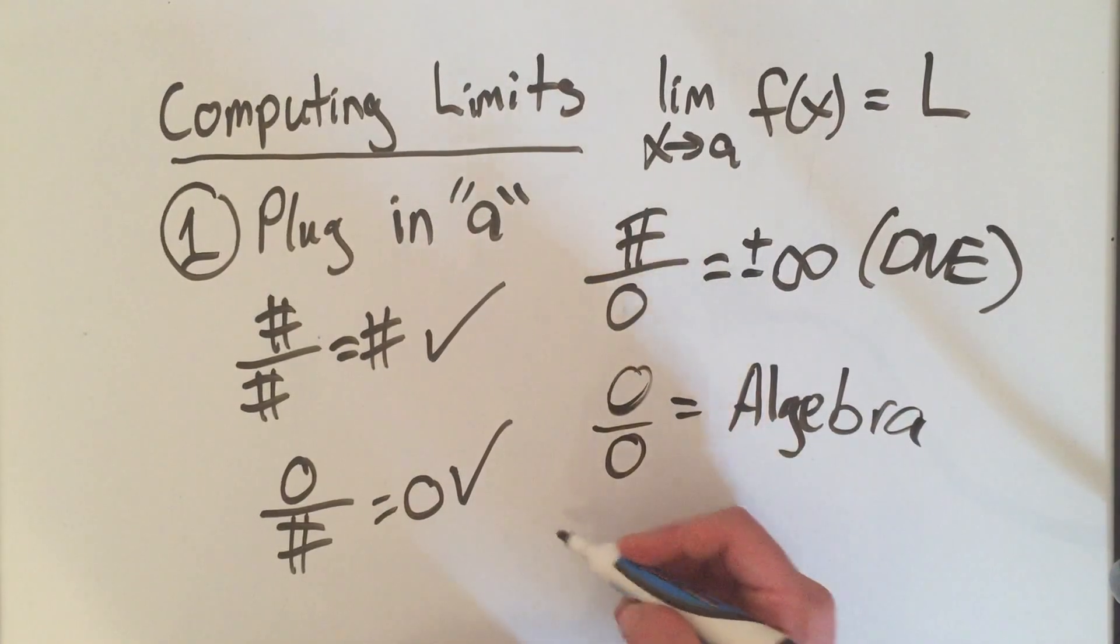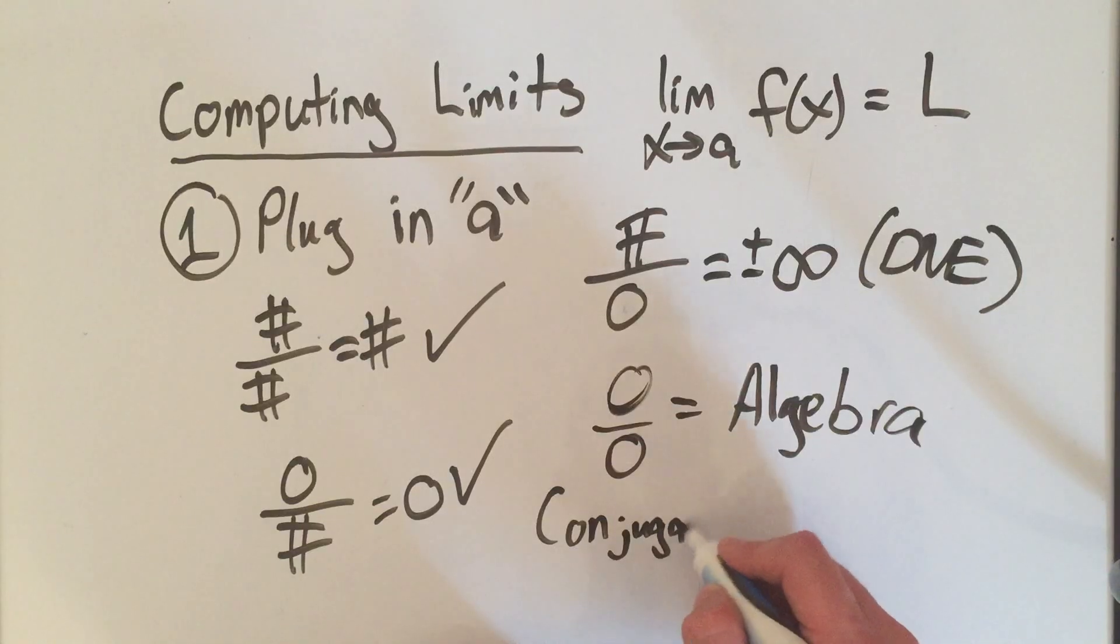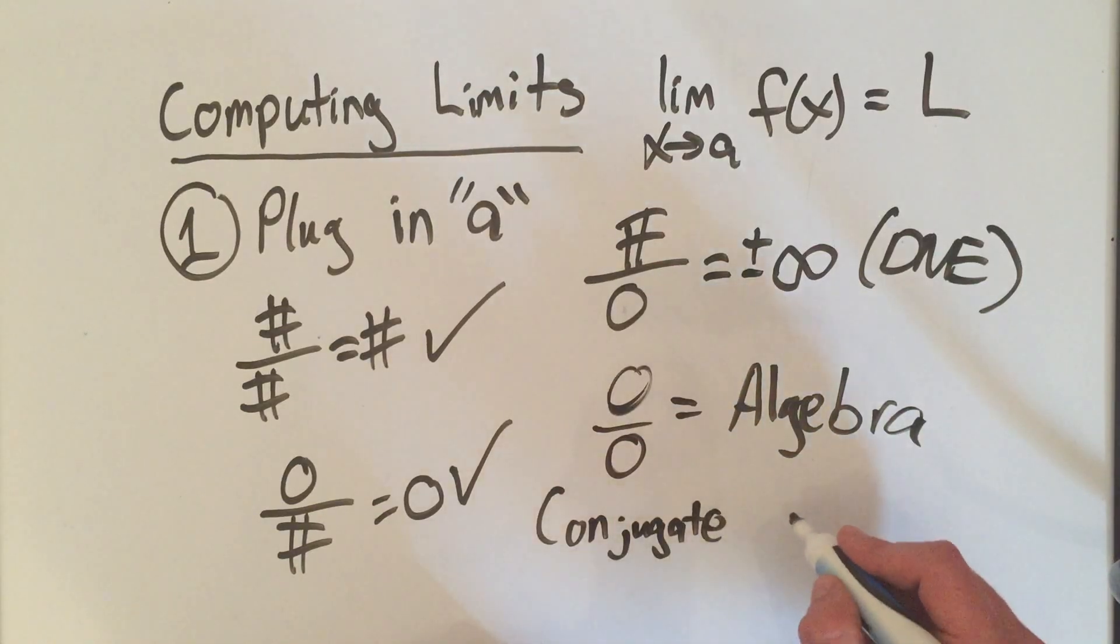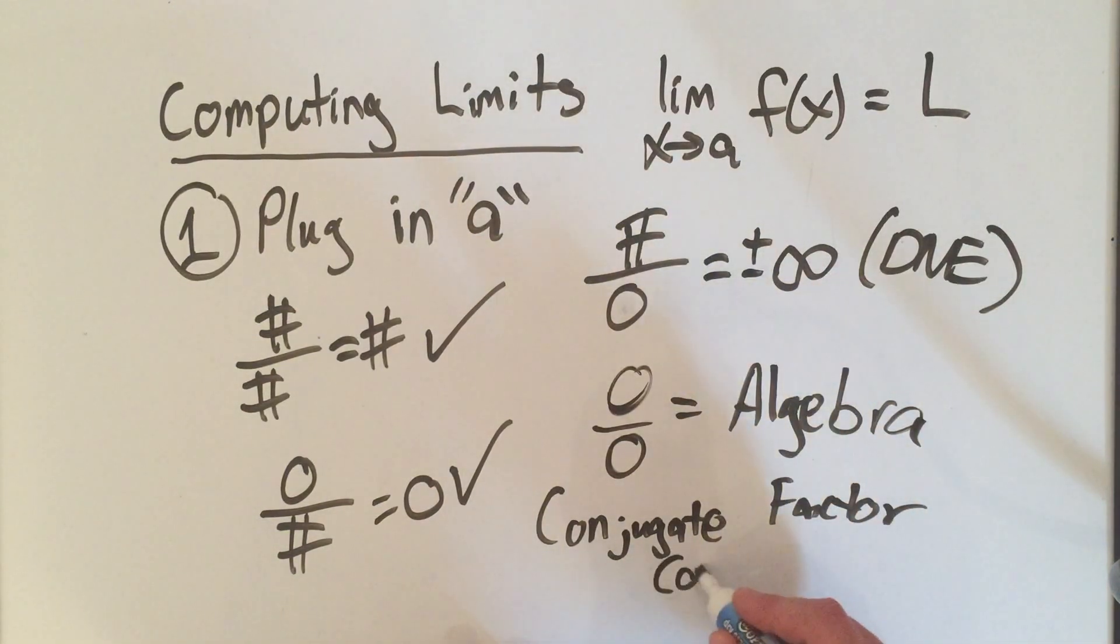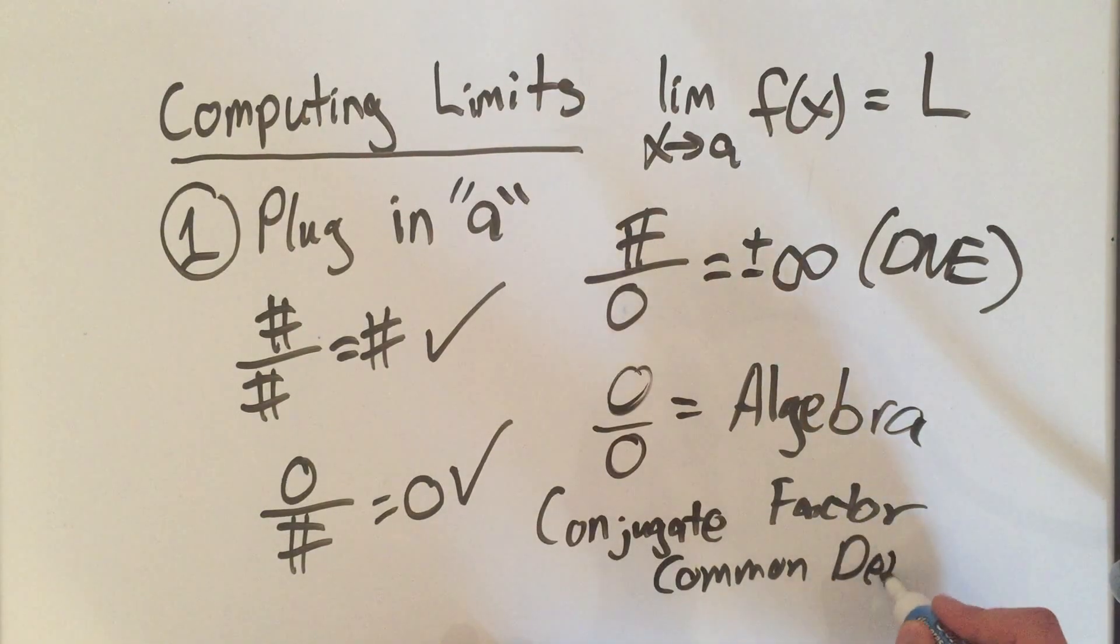And so this is the case where you have to multiply by the conjugate, or you have to factor, or you have to get a common denominator. These are just the main cases, and we're going to cover each of those individually.